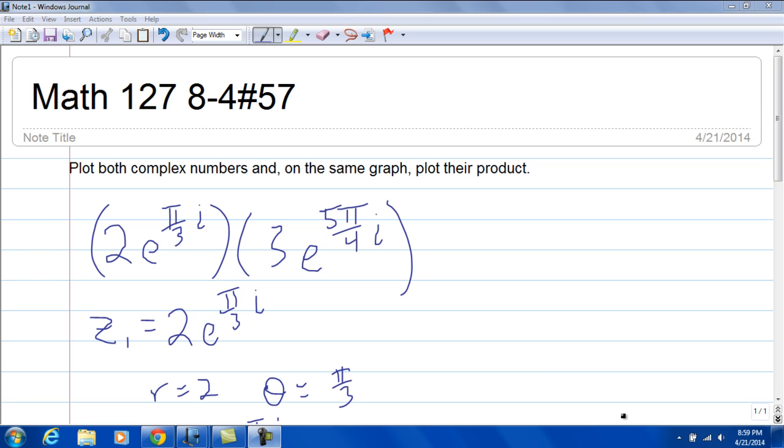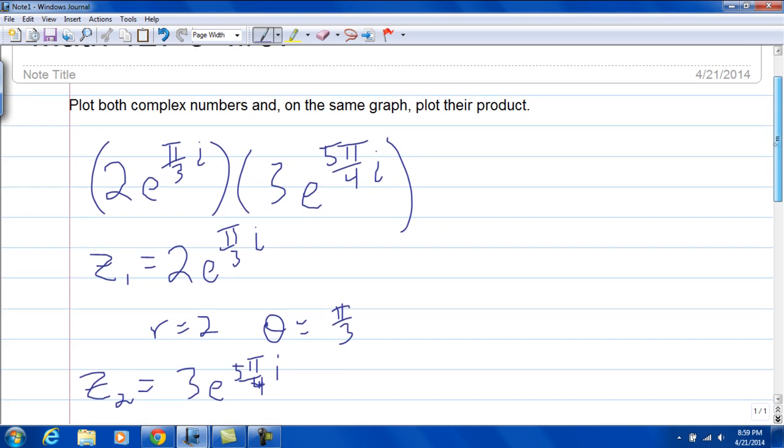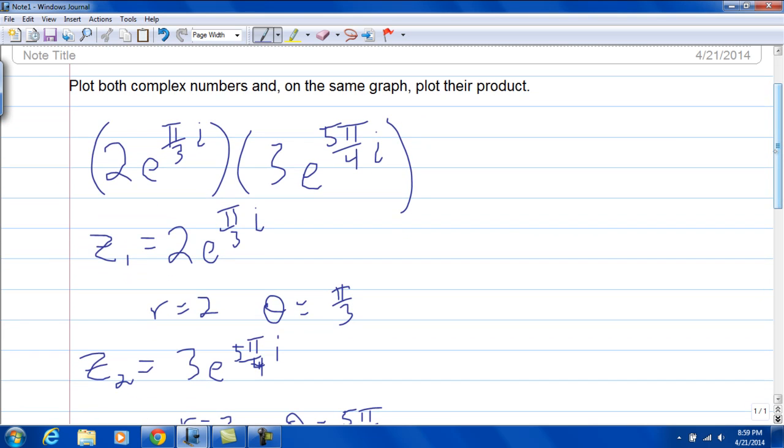So we have 2e to the pi over 3i times 3e to the 5 pi over 4i. So identify that my z1 would be 2e to the pi over 3i. And that means that the magnitude of z is 2 and theta is pi over 3.